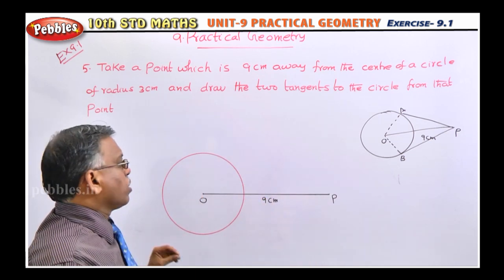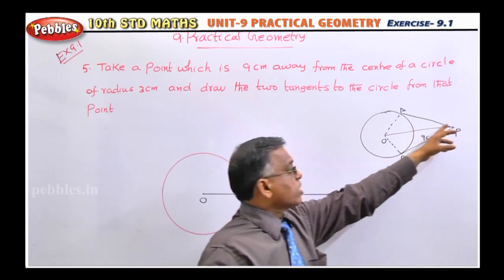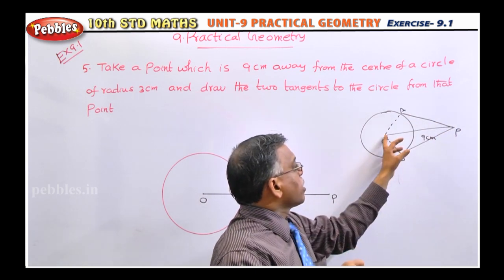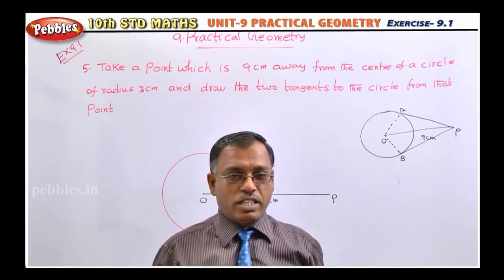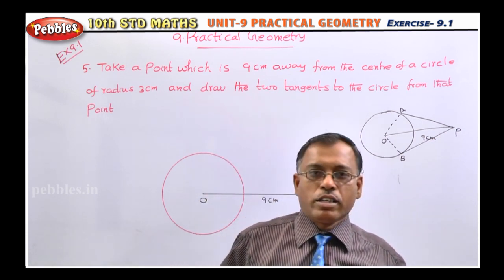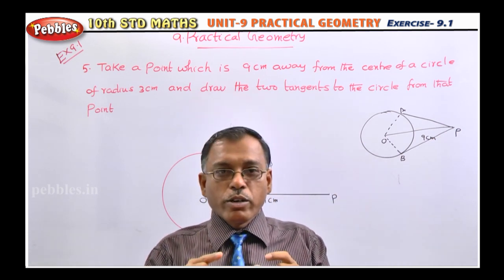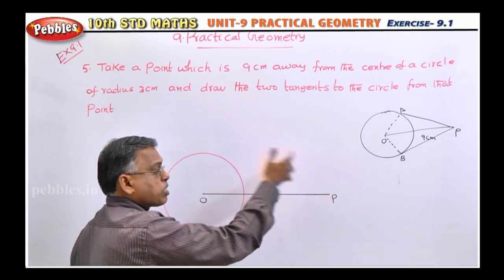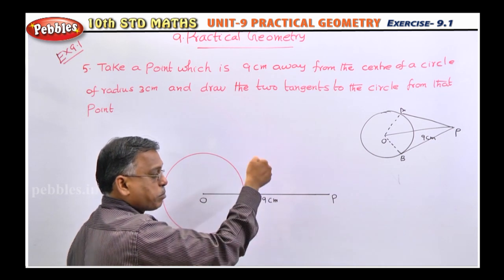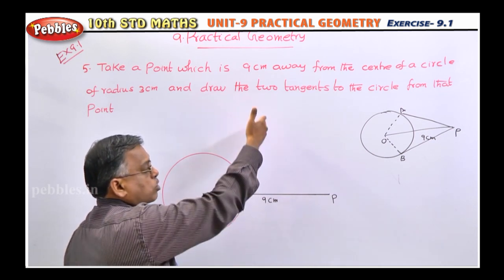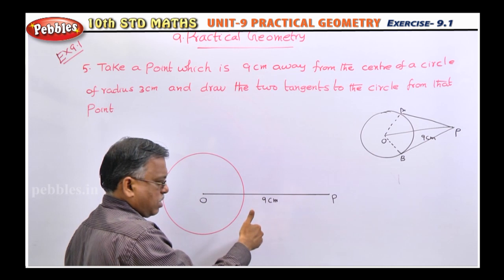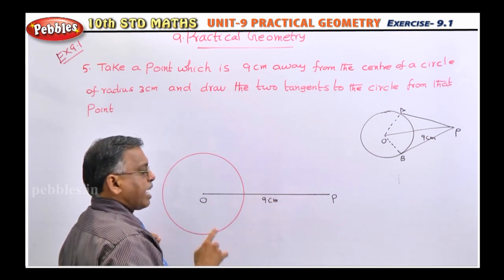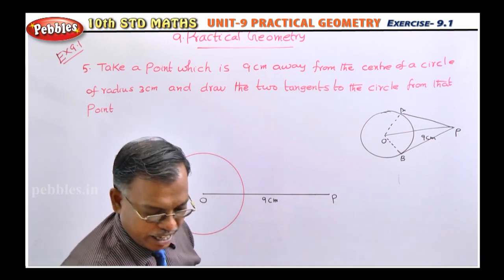Now, what we should do is, in order to draw the tangents PA and PB, you should draw the perpendicular bisector of OP. This is very, very important. What is the meaning of perpendicular bisector? Perpendicular means the angle should be 90 degrees. Bisector means half of. So you draw the line such that it bisects OP and is also perpendicular to it — the angle is 90 degrees. There is one procedure for that.